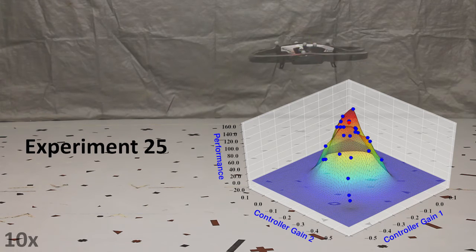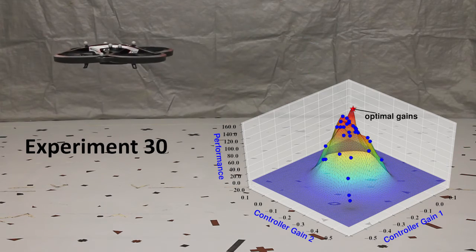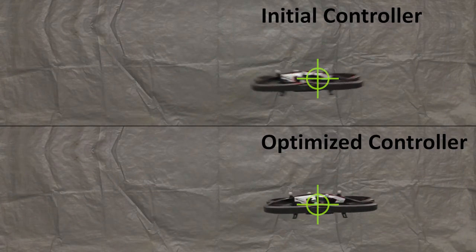The algorithm terminates once we have gained sufficient knowledge about the best controller parameters. Here you see them highlighted. The resulting learned controller significantly outperforms the initial one.